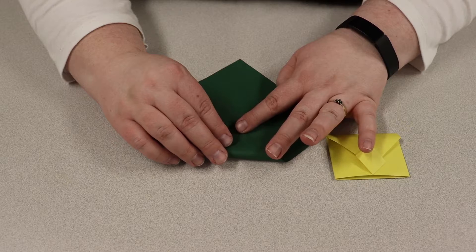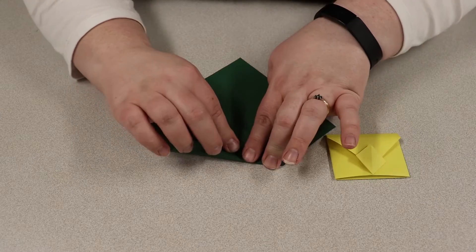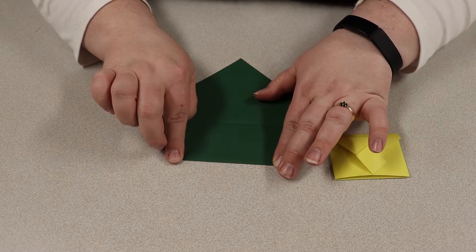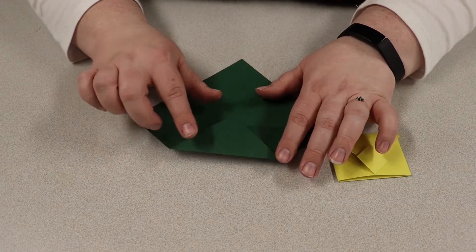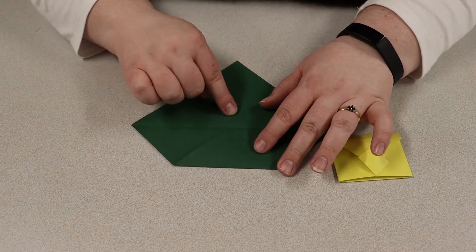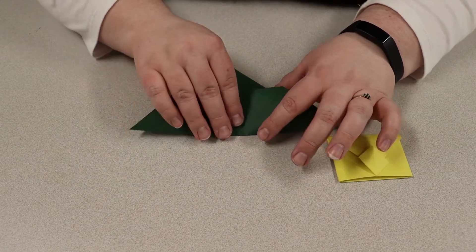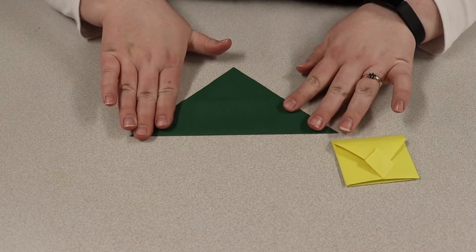You can also fold this along the other diagonal here so that you have a line to go off of here, but you don't have to. So once we fold that up to the middle, we're then going to fold the whole thing over where we just folded it.